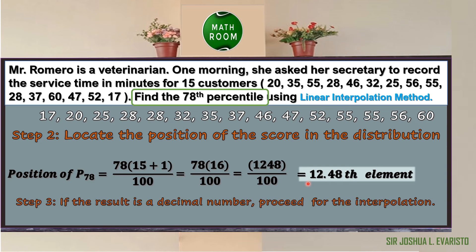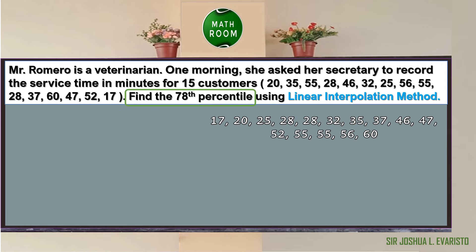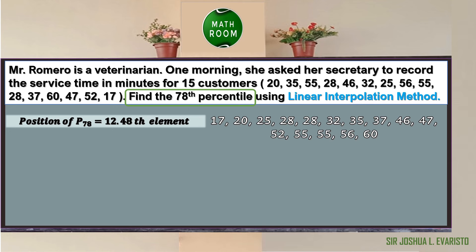So the position of the 78th percentile is at the 12.48th data element. Step 3: since the result is a decimal, interpolation is needed. The position of P sub 78 is between the 12th and 13th data elements. Our 12th data element is 55 and our 13th data element is also 55.